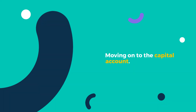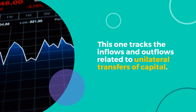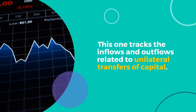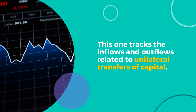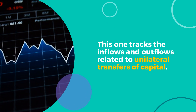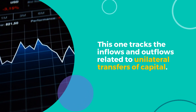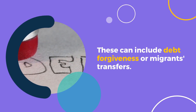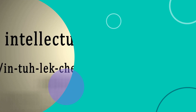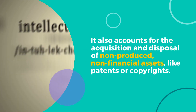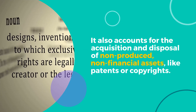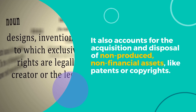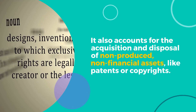Moving on to the capital account. This one tracks the inflows and outflows related to unilateral transfers of capital. These can include debt forgiveness or migrants' transfers. It also accounts for the acquisition and disposal of non-produced, non-financial assets, like patents or copyrights.